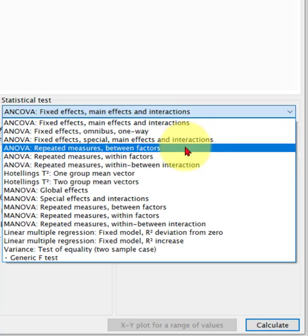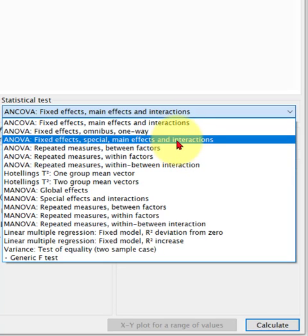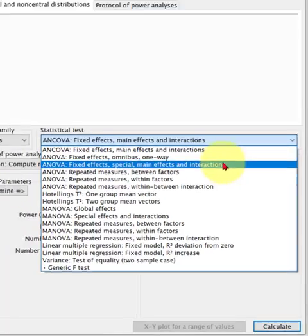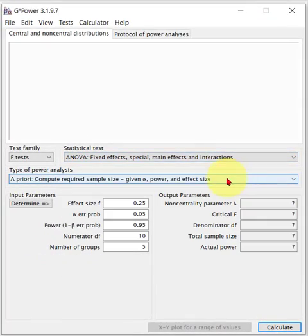Main effects are for each and every categorical variable. And the interaction is between the categorical variables and their effect on the DV. So let's go ahead and click that one in there.